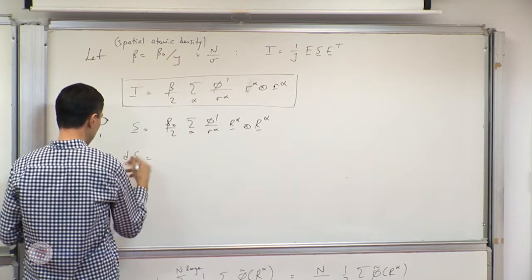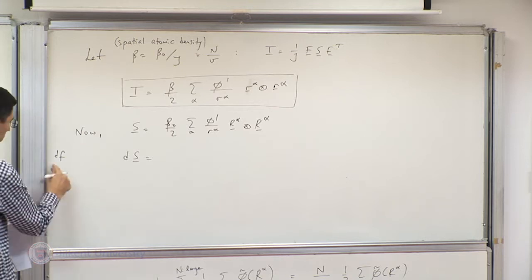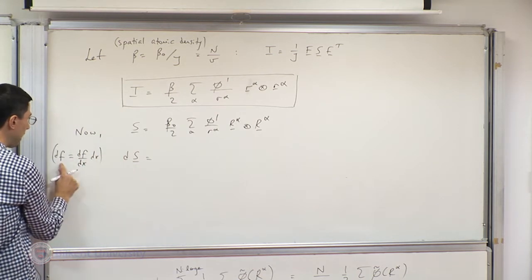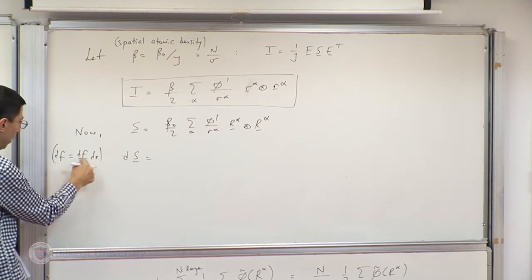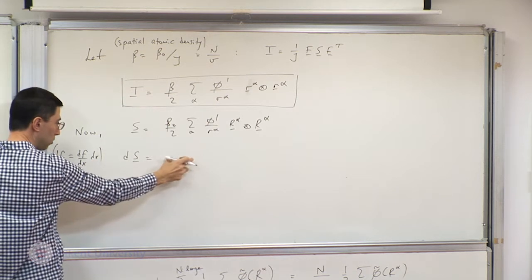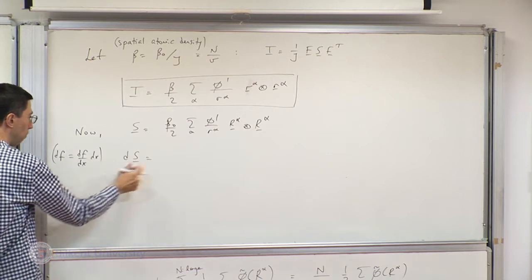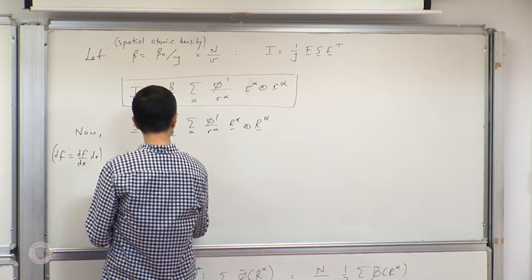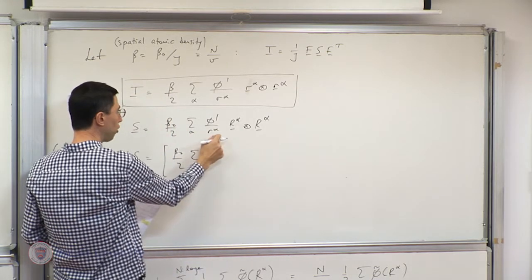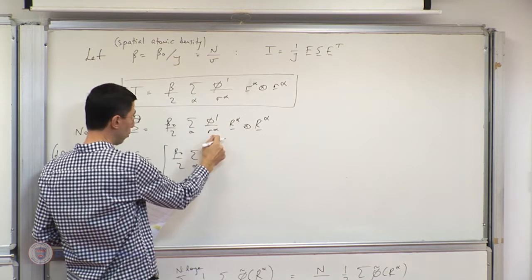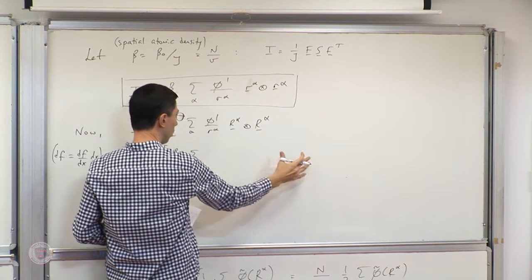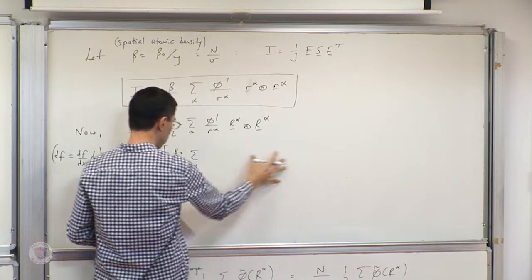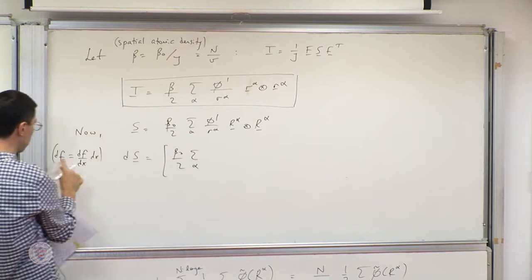Taking the derivative of that expression with respect to the deformation gradient gives beta-naught over 2 times the sum over alpha. We need the derivative of phi-prime over r_alpha with respect to r_alpha, multiplied by the derivative of r_alpha with respect to F. Since F is a second-order tensor and there is already a basis here, what we will end up with is a fourth-order tensor operating on a second-order tensor to give a second-order tensor. The first derivative with respect to r_alpha squared minus the derivative of r_alpha times phi-prime over r_alpha, forming the basis.